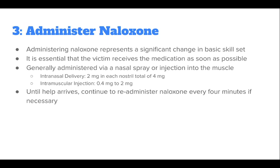Administering naloxone can feel overwhelming, particularly for those that lack the licensure to routinely administer medications. However, it is essential that the victim receives the medication as soon as possible. Naloxone is generally given via nasal spray or injection into the muscle. The intranasal delivery is 2 mg in each nostril, for a total of 4 mg. The intramuscular injection is 0.4 mg to 2 mg. Until help arrives, continue to re-administer naloxone every 4 minutes if necessary.